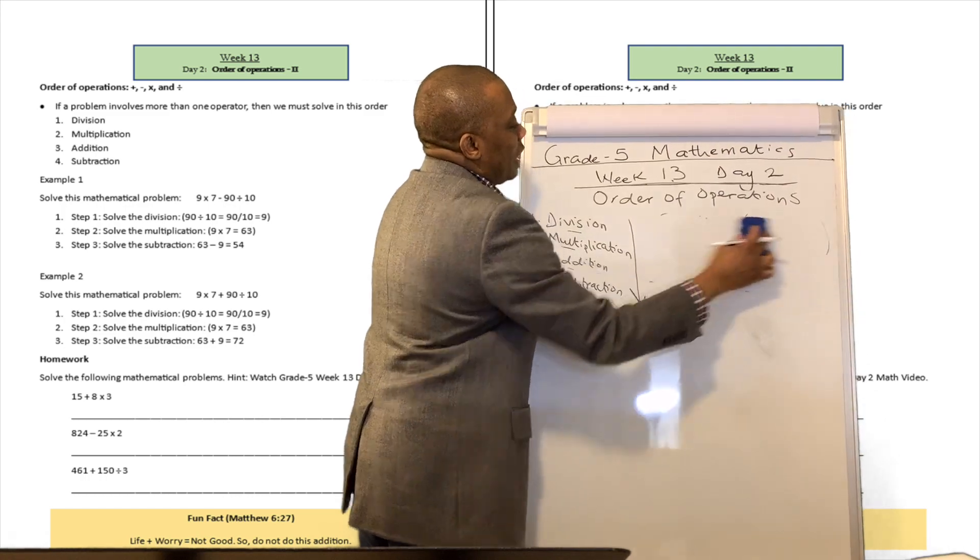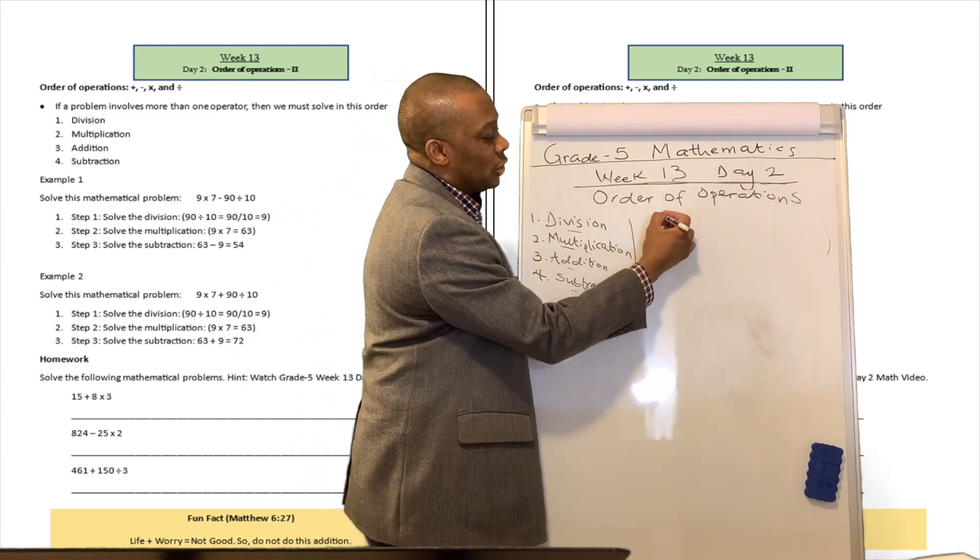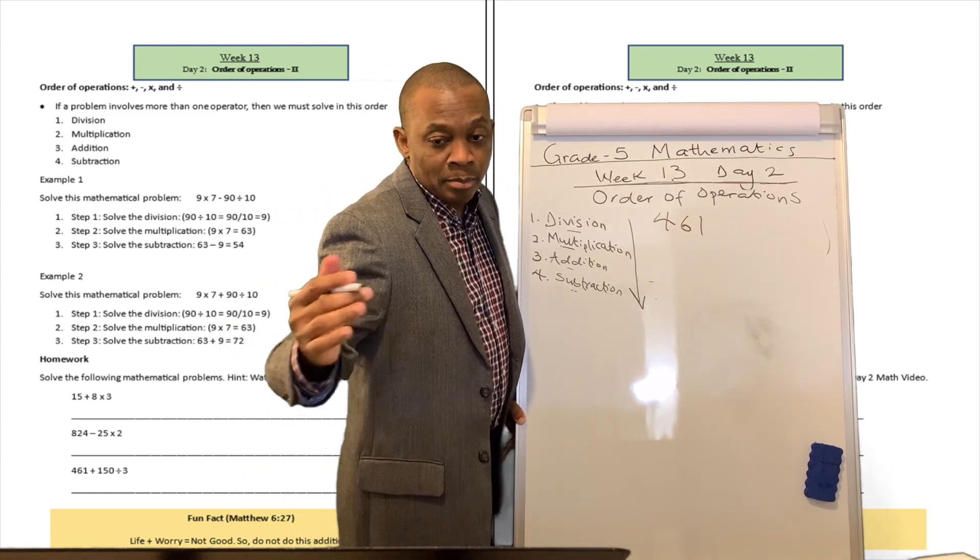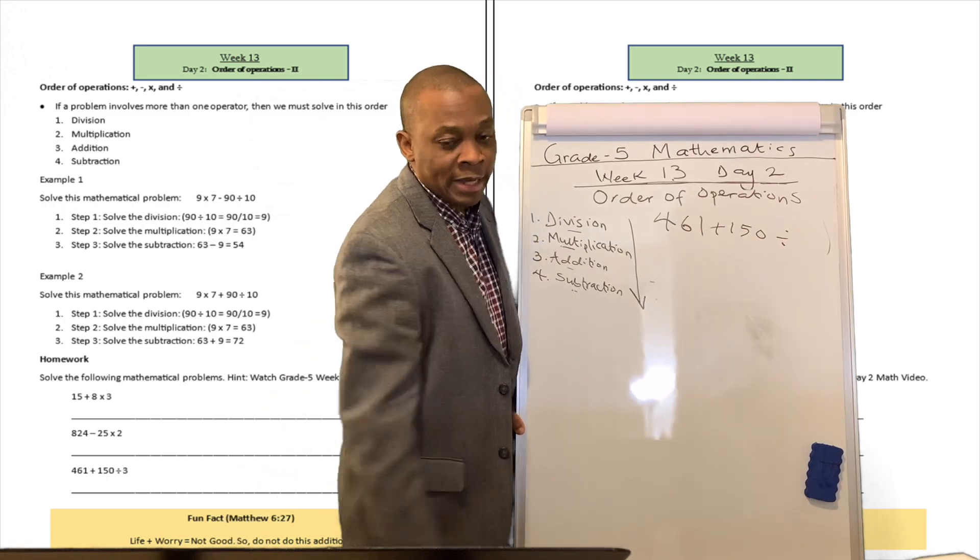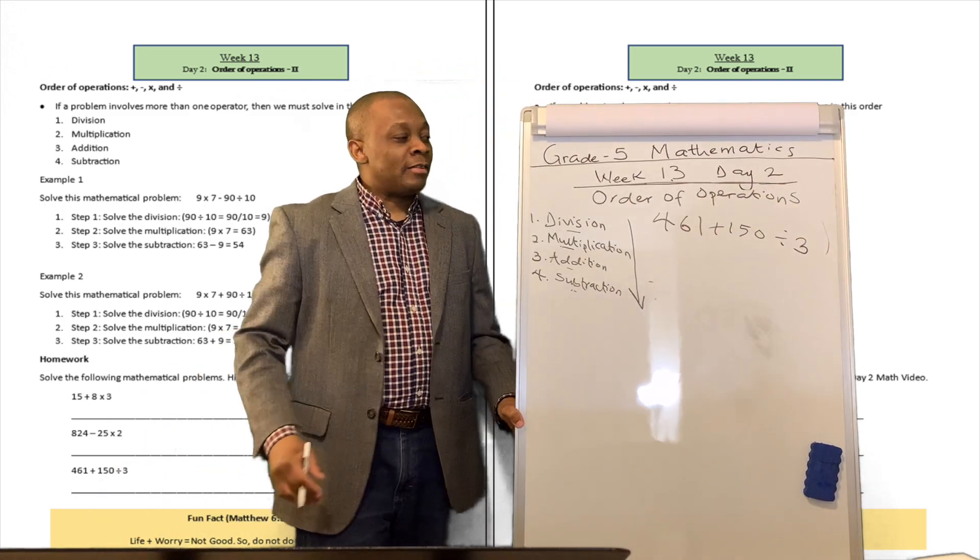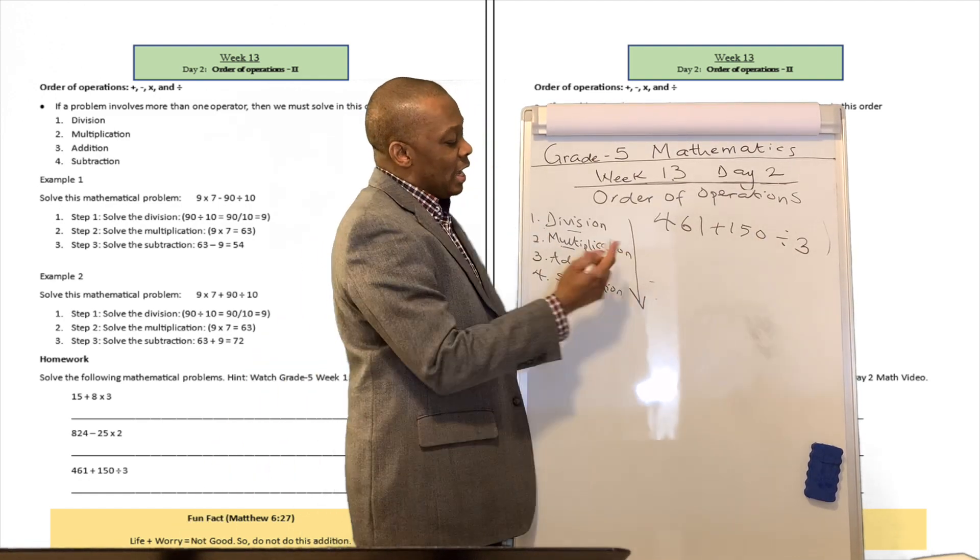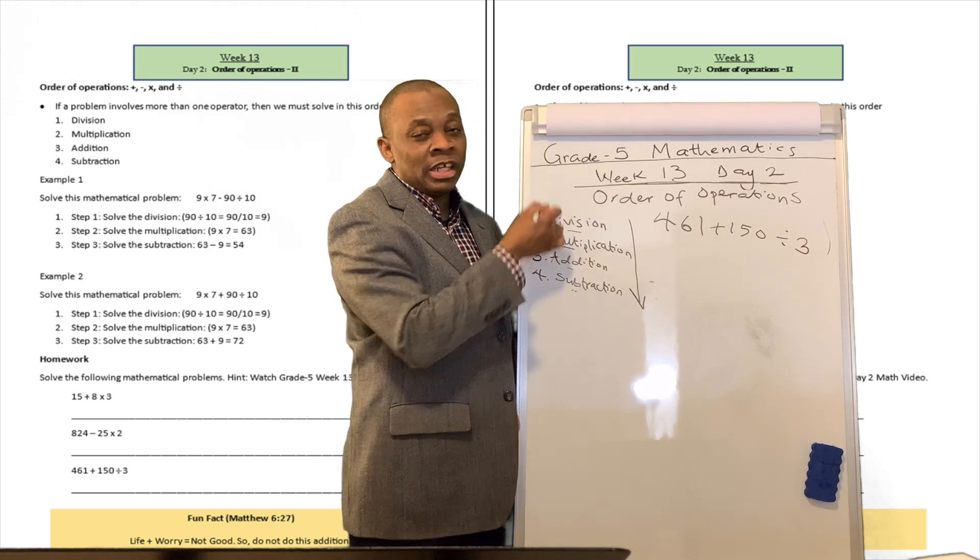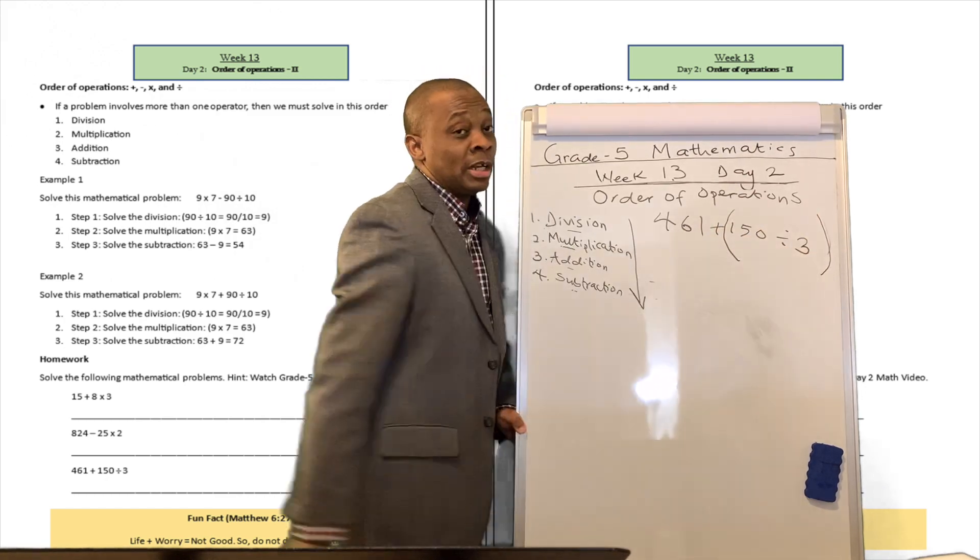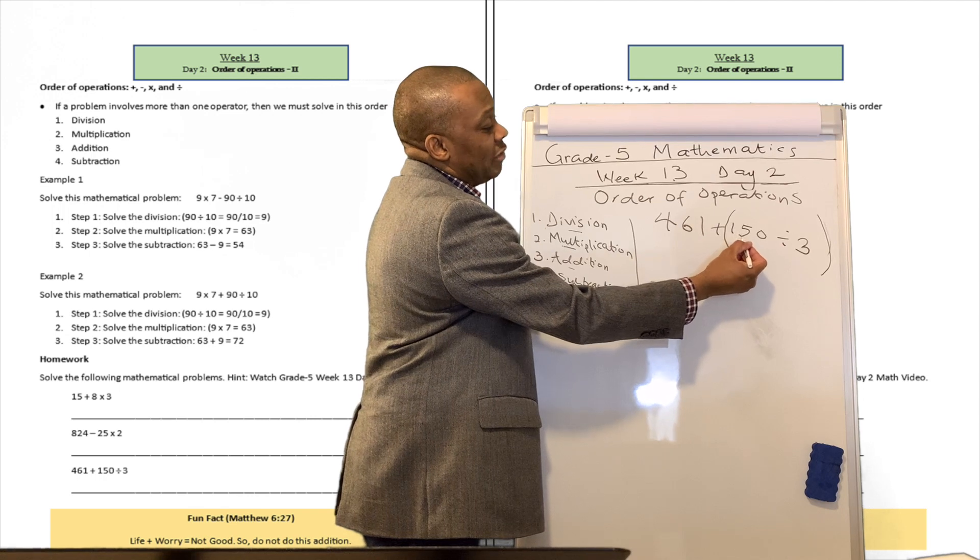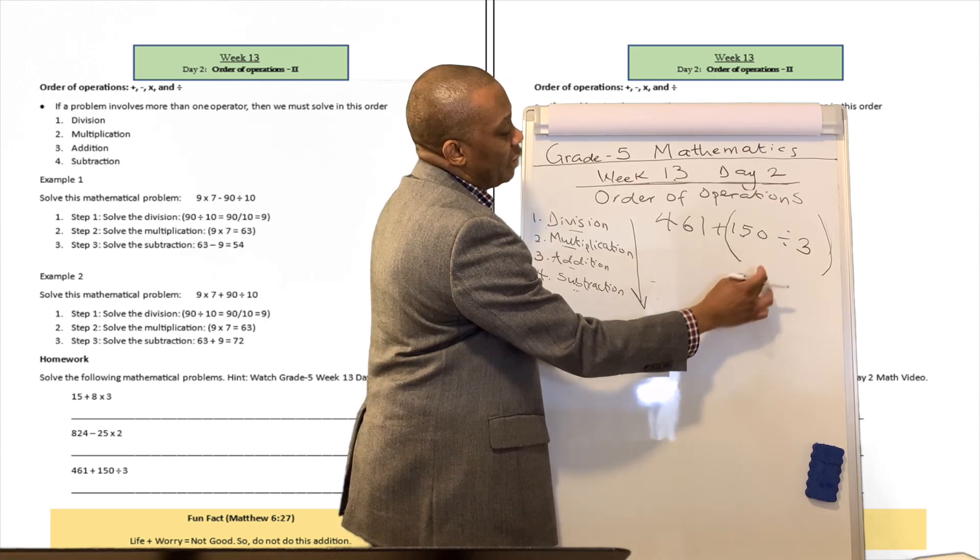All right. Let's do another exercise. Let's try to do another exercise: 461 plus 150 divided by 3. All right. Now, this one has a division component to it. Did you see that division over there? And then it has an addition component to it. Well, we've got to solve in this order. So why don't we do this? Let's help ourselves by putting brackets over there, just like that. So you're going to say what is 150 divided by 3? That's going to be equivalent to, let's say 150 divided by 3.